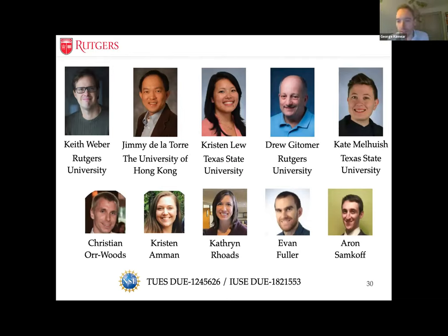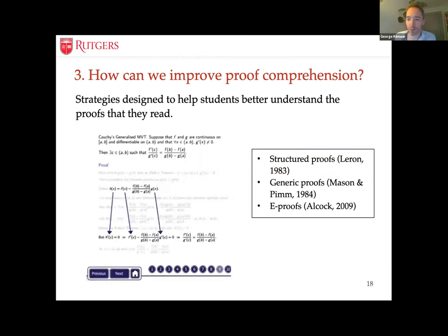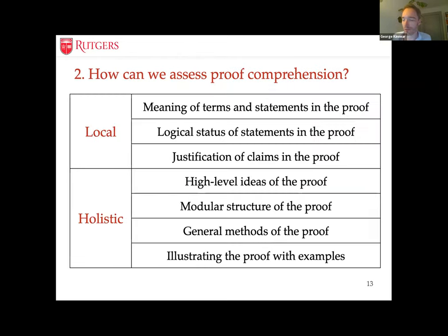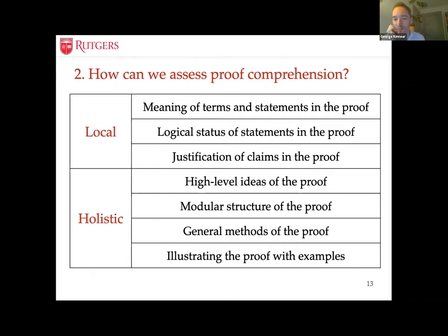Thanks very much, Pablo. I've been keeping an eye on the Q&A forum. David Searle asked if you could say a bit more about the model with the seven parts. People have helpfully posted links to the paper already. I'll give a brief description of each type. For the three local types: 'Meaning of terms and statements' asks whether students know what terms mean — for instance, what a prime number is or what it means for a set to be infinite.